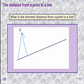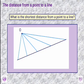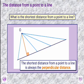The distance from a point to a line. The question is: what is the shortest distance from a point to a line? We have our point 0.4 and the line below it. The shortest distance from a point to a line is always the perpendicular distance.